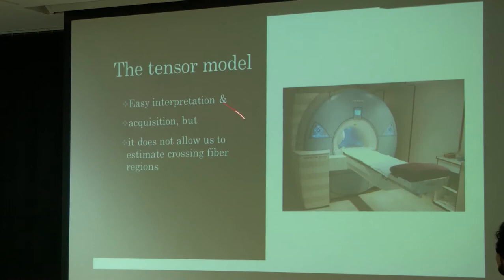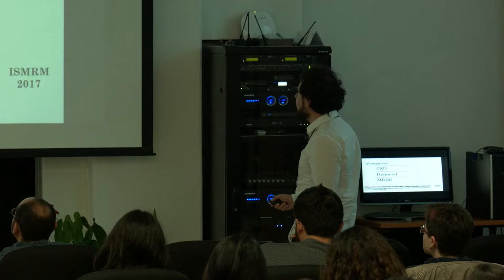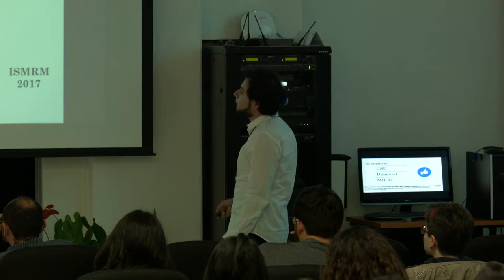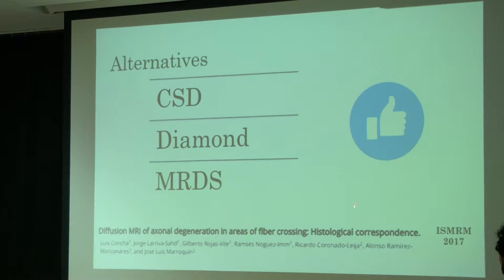So we need more advanced models. I'm going to talk about the alternatives involved in this project: CSD and MRDS, and in the future possibly also Diamond. We have a problem with crossing fiber regions, and we have some mathematical approximations. But we need validation — we need to validate these models and understand the biological background present in this area.